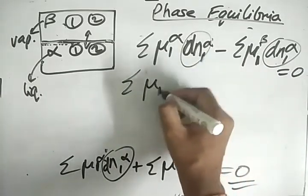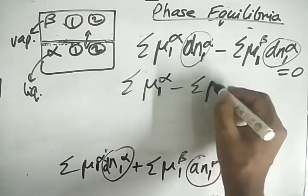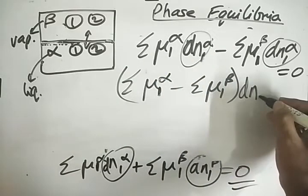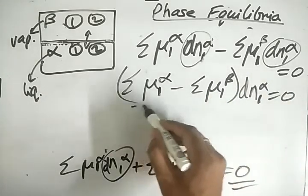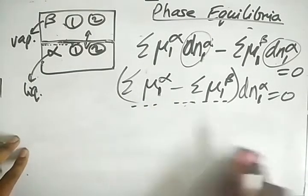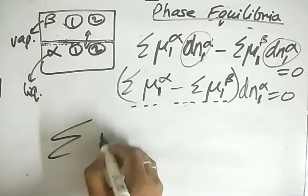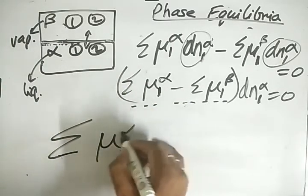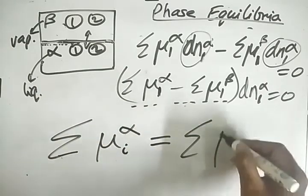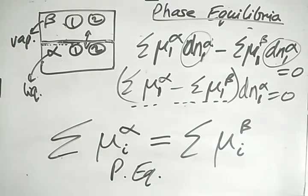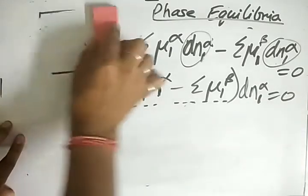Since the moles can and do change, the term in parentheses must be zero. Therefore, for phase equilibrium, the chemical potential of all compounds in the alpha phase must equal the chemical potential of those compounds in the beta phase: mu-i-alpha equals mu-i-beta for all i. This is the condition for phase equilibrium.